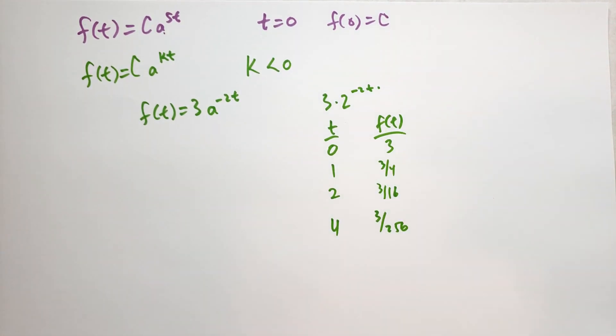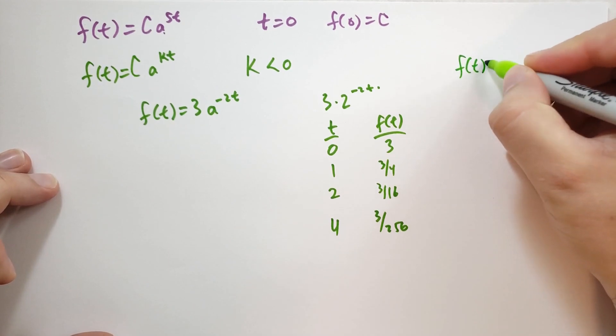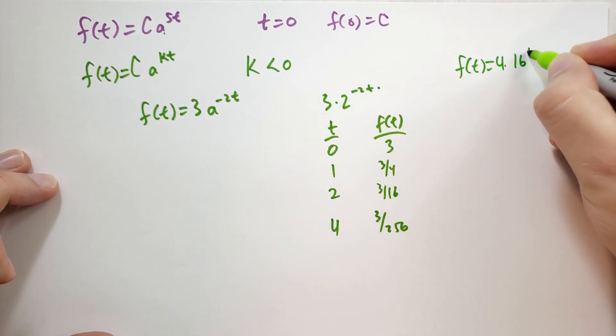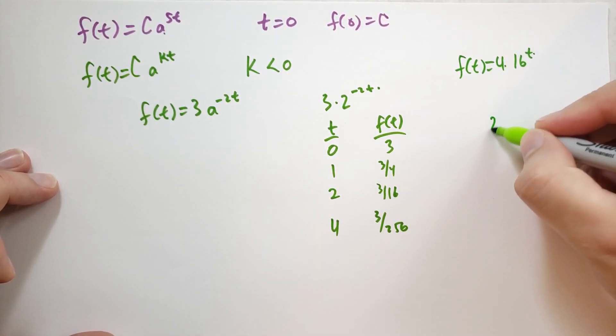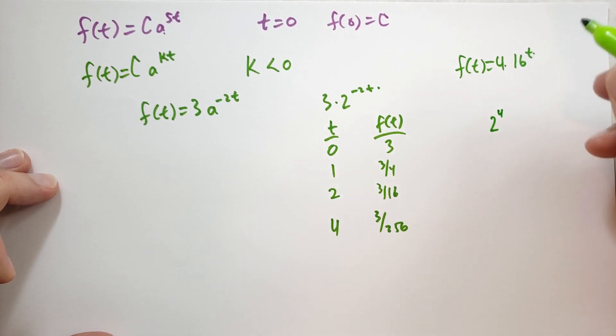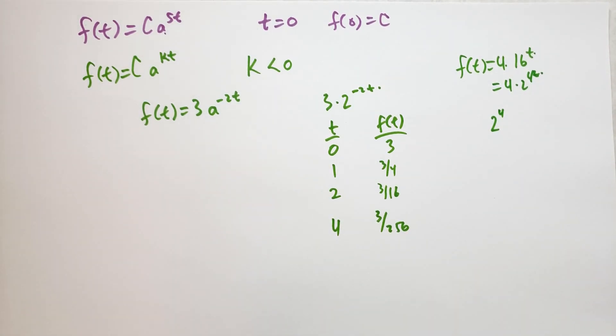Number 7, note that if you have f(t) equals 4 times 16 raised to the power of t, well, what's 16? That's just 2^4. So this is the same as 4 times 2^(4t). You can do things like that as well if that helps you solve the problems quicker.